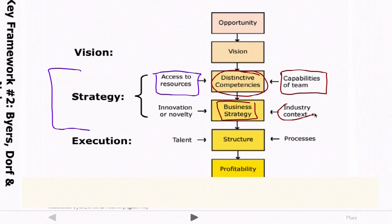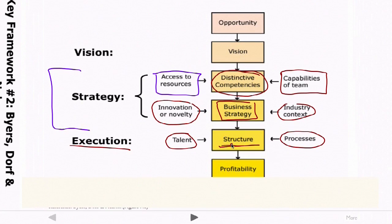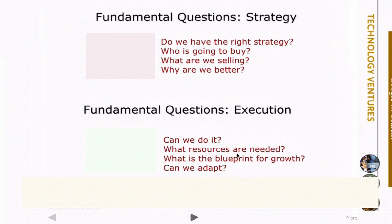The business strategy is partly based on the industry context and partly on the level of innovation or novelty in the venture. Once you've thought through your strategy, it all comes down to execution — putting in place processes, bringing together talent, and embedding them in an organizational structure that actually gets the work done. Fundamental questions under strategy are: who's going to buy, what are we selling, why are we better than the competition? Under execution: what resources do we need, what's our blueprint and plan going forward, how can we adapt to unanticipated things, and who do we need to execute on this business?